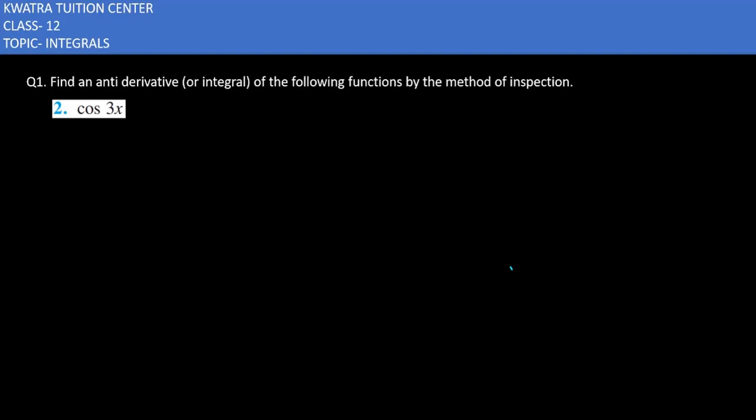Question number 2 says find an anti-derivative of the following function by the method of inspection. Same question as the first one. And here we have cos 3x integral. So first of all,